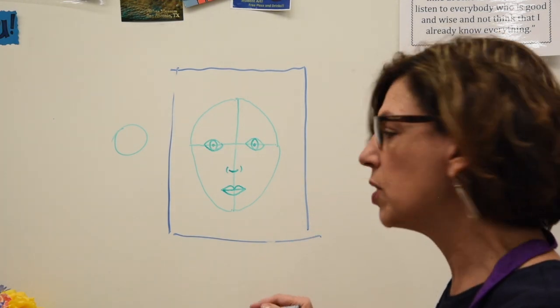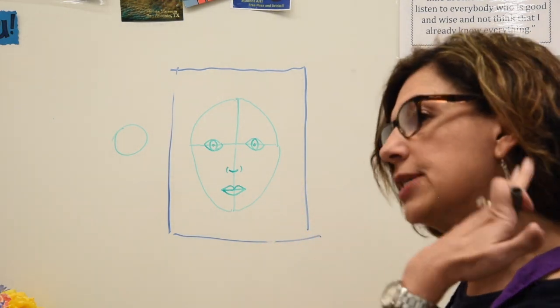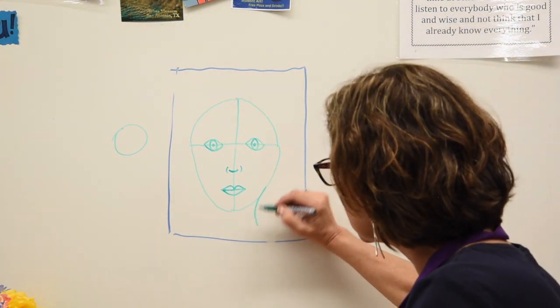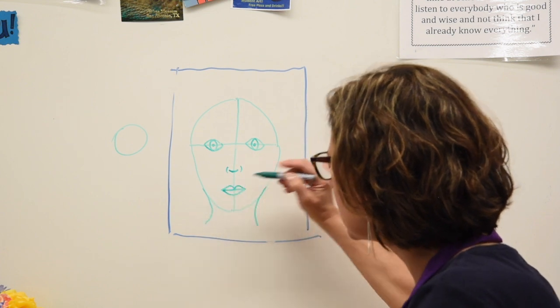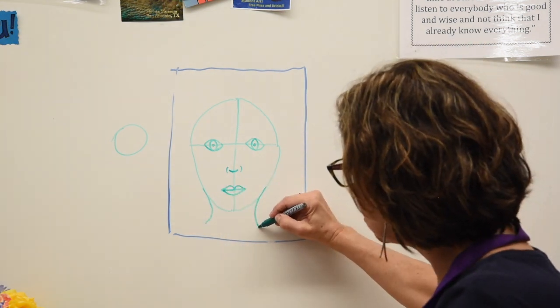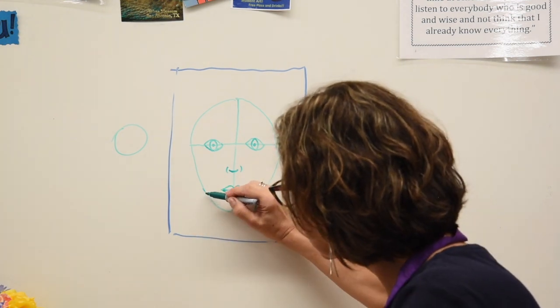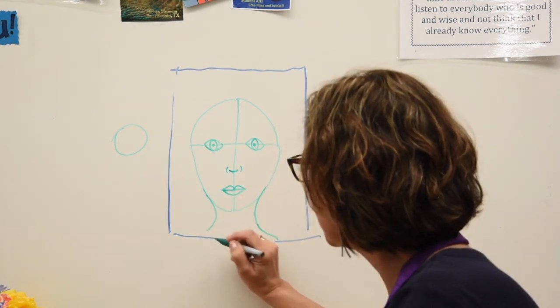To do the neck, remember we don't draw two straight lines. We want a nice curve to her neck. So I start at the cheek and I bring it around. I start at this side of the cheek and I bring it around. You can bring this down as far as you want and add your shoulders. Actually now that I am doing this I am going to bring it a little skinnier, and then I am going to curve it down.